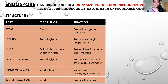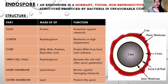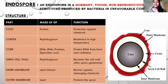To understand sporulation, we first have to take a look at Endospore. What is Endospore? Endospore is a dormant, tough, non-reproductive structure produced by bacteria in unfavorable conditions. Dormant means in an inactive state, and unfavorable condition means when the bacteria do not get proper nutrition or proper food for their growth.